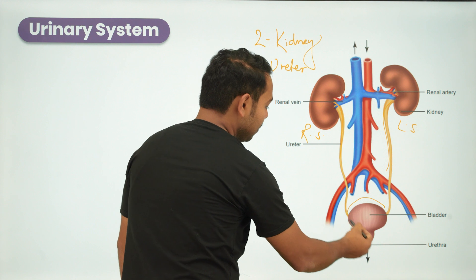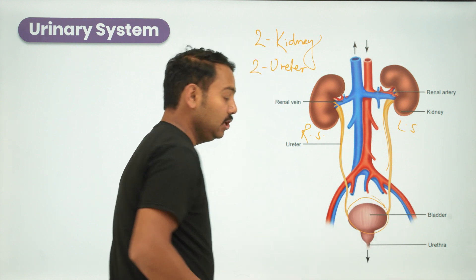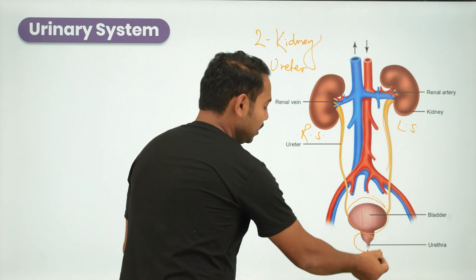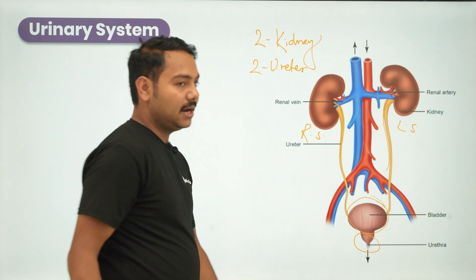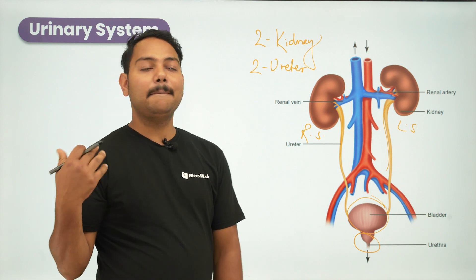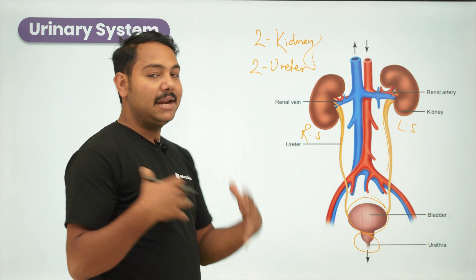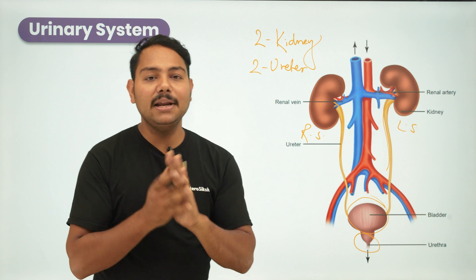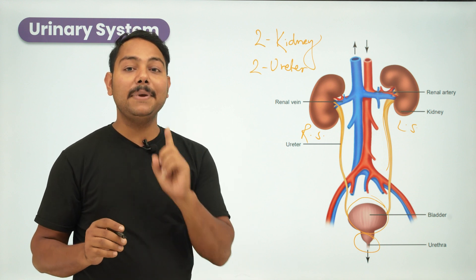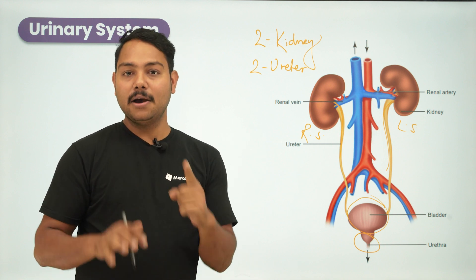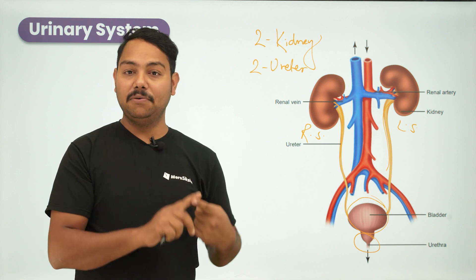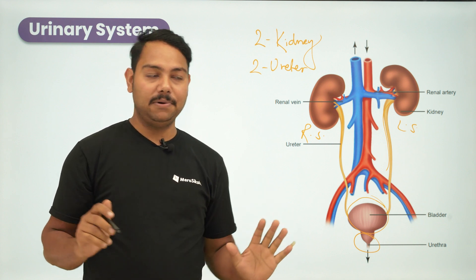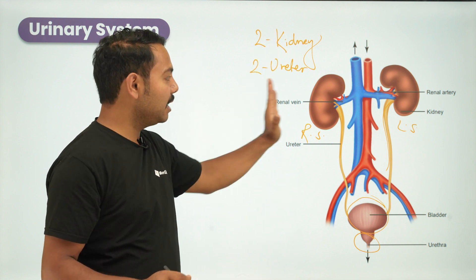There is also a urinary bladder, which stores urine and finally releases it out. So, the human urinary system consists of a pair of kidneys, a pair of ureters, a urinary bladder, and a urethra.